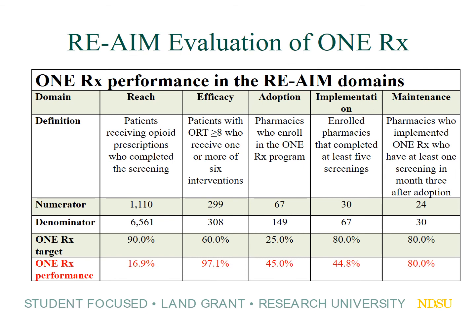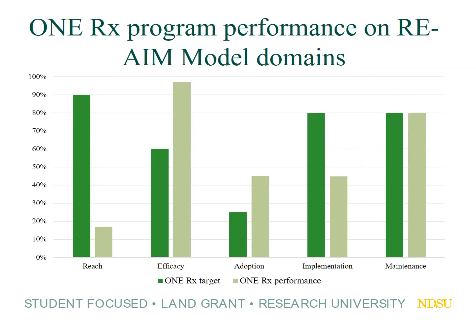Now in terms of results, here you'll see the numerator and denominator values used to perform these estimates. The numbers have increased since then, but this reflects what it was at the time this analysis was done. It turns out that only 16.9 percent of patients who were eligible for the screening actually received the screening. This was an area of interest as we began to explore why — it included that the pharmacist didn't have time — and you can see those comparisons in a bar graph format.